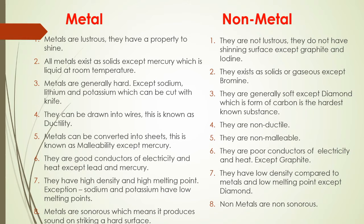We will study metals and non-metals by comparing their properties. First point: metals are lustrous — they have the property to shine. But non-metals are non-lustrous, they do not shine, except graphite and iodine.